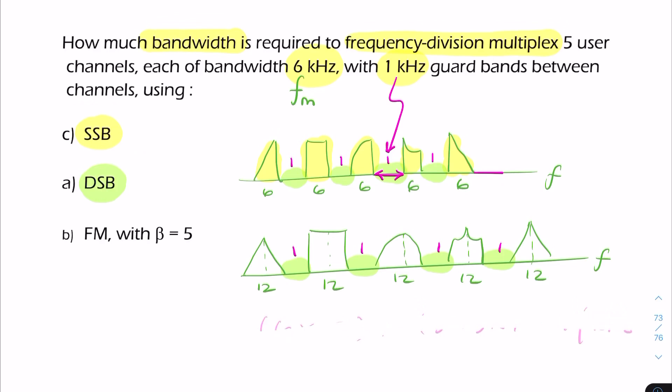Now for part c, we have FM and we're given the modulation index. We can reuse this diagram. The bandwidth of each station, using Carson's rule, can be approximated as 2(1 + β)fm, so that's 2(1 + 5) times 6, which gives you 72 kilohertz per station.